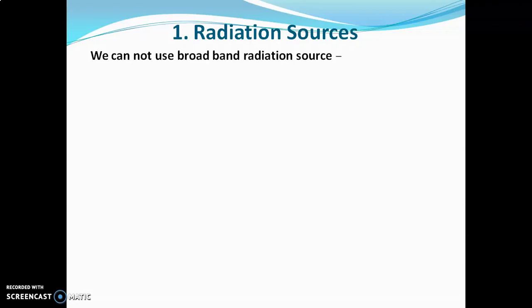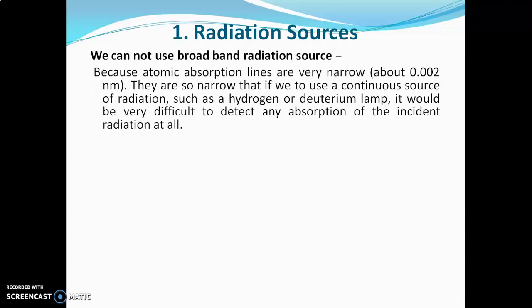Regarding the radiation source — we cannot use a broadband radiation source here. A radiation source which emits continuous spectra is called a broadband radiation source; for example, a tungsten lamp, which emits continuous radiations in the visible region. Such a source is not useful in AAS because atomic absorption lines are very narrow. They are so narrow that if we use a continuous source such as hydrogen, deuterium, or tungsten lamp, it would be very difficult to detect any absorption of incident radiations at all.